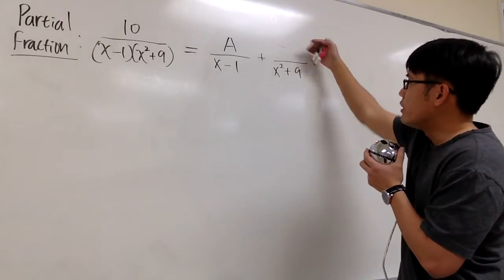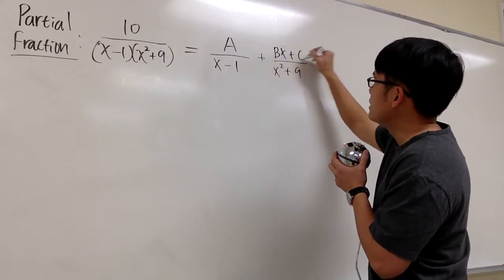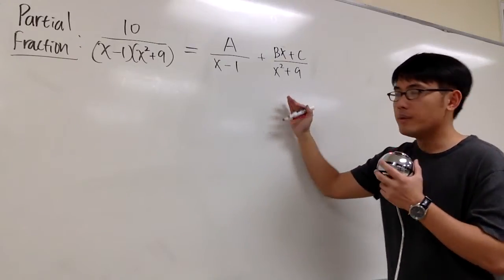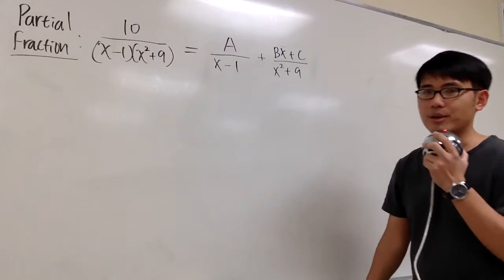And for the numerator, because this is quadratic, the numerator, we are going to put down Bx + C. It has to be linear. And this right here will be the setup. If you do this setup, then that's correct and the work is going to be the simplest.